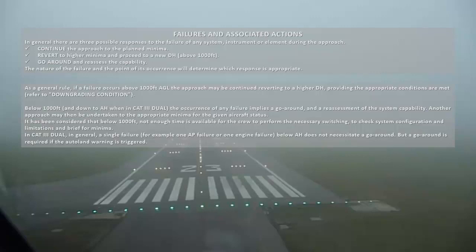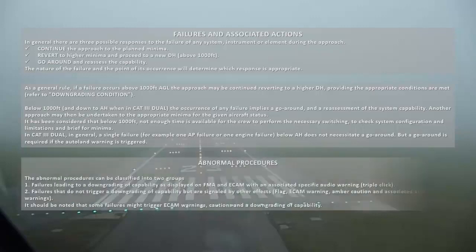In CAT 3 dual, in general, a single failure — for example one autopilot failure or one engine failure — below alert height does not necessitate a go-around. But a go-around is required if the autoland warning is triggered.